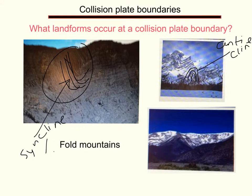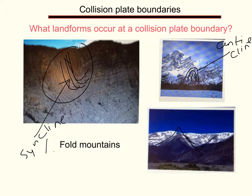Fold mountains are typically tall, steep, and rugged, and because of the high altitudes they are usually snow-capped. In the valleys in between the folds you usually get areas of water, so there are lakes that are fed by glaciers. So the only landform at a collision plate boundary are fold mountains.